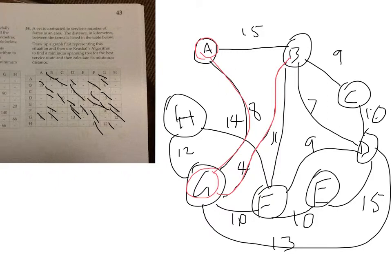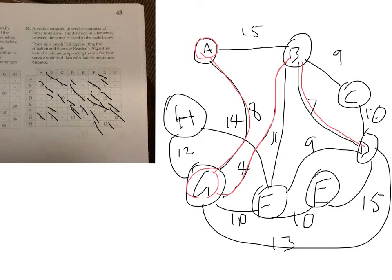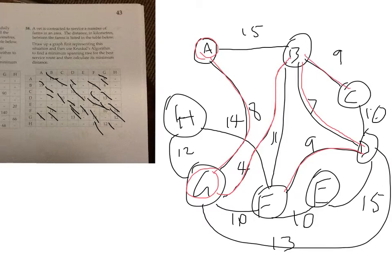Now what's the smallest one? I've got a 7, a 9, an 11, a 10, a 13, a 12 — so I'm going to do the 7, going to D. Now from the connected vertices I've got a 15, a 13, a 9, an 11, and another 9. The 9s are my smallest ones. Let me check who's connected: C is connected, B is connected, D is connected, F is connected.